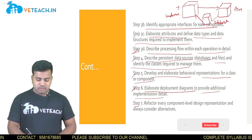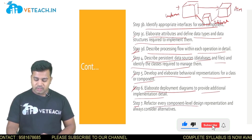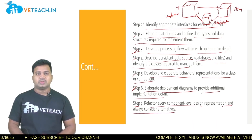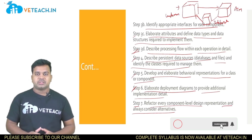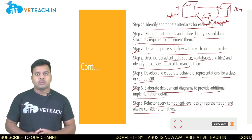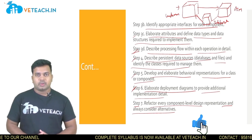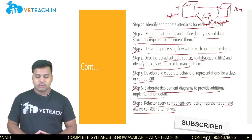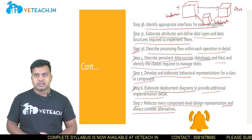In step seven, you refactor every component level design representation and always consider alternatives. Whatever you have done in the previous sections, you need to refactor all those things — identifying the best ways to address any particular problem. This kind of refactoring is very important and should be done across every alternative section.